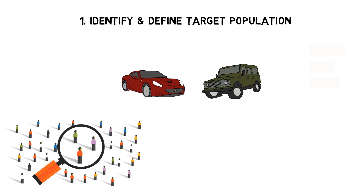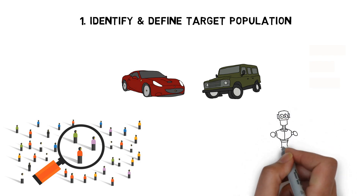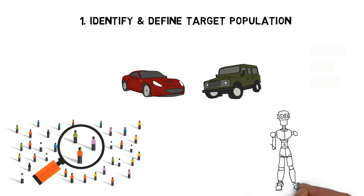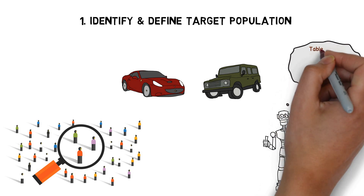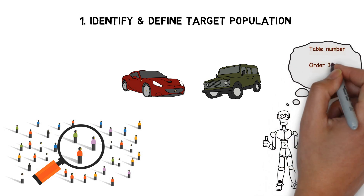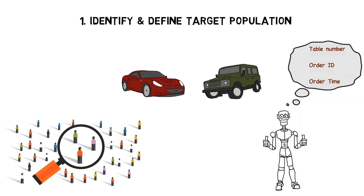Another example I would take is some restaurants in Japan. One restaurant goes by the name of Japanese Cafe, which uses robots — a product of artificial intelligence — for serving customers. So in this case, the population data for the robot would be like the table number, order ID, the orders by the customers, or the time of order, etc. And all this data gets processed in the system of the robot and they act accordingly.